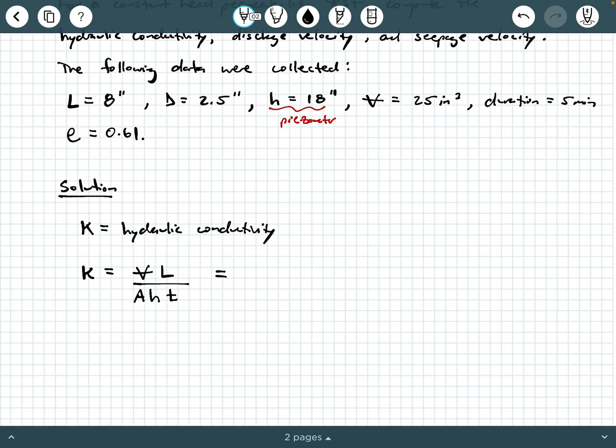So here we're going to say 25 cubic inches multiplied by the 8-inch specimen length, all divided by the cross-section area of flow. That's going to be pi times that diameter squared over 4. So we'll lump that together. That's A. The constant head that's established is 18 inches and the time is 300 seconds. Or we could have kept that in minutes if we wanted to.